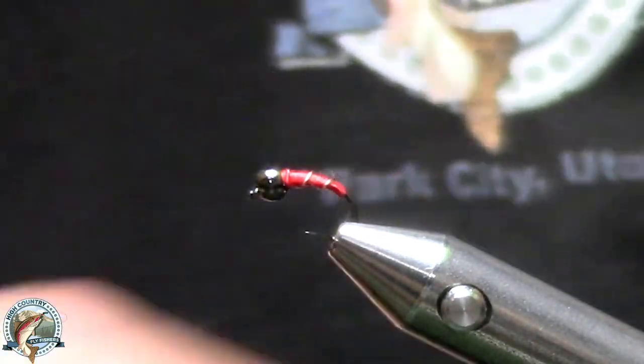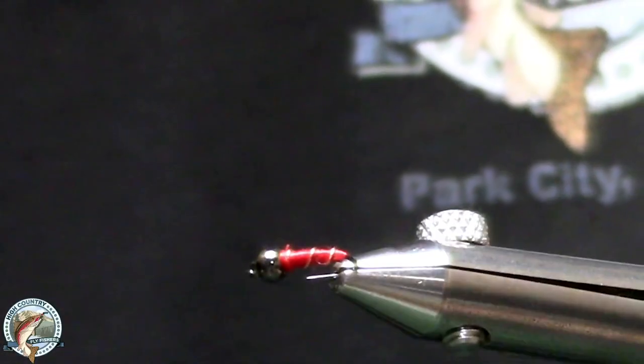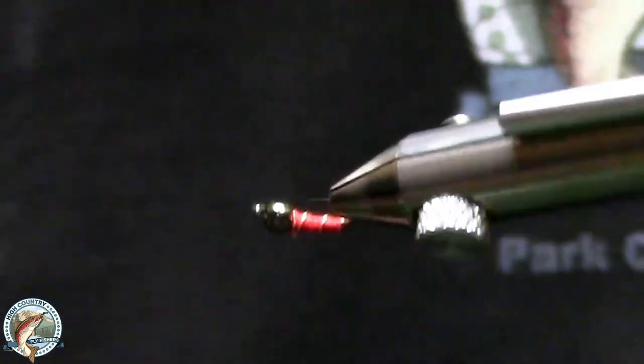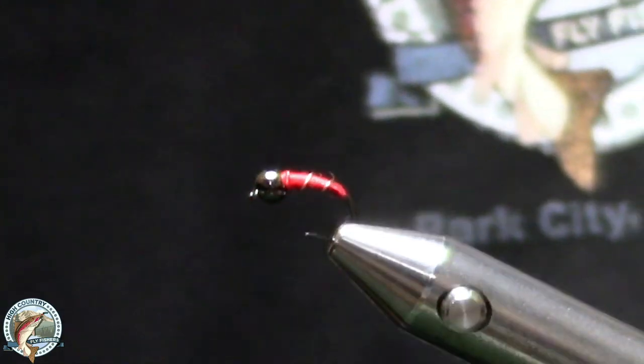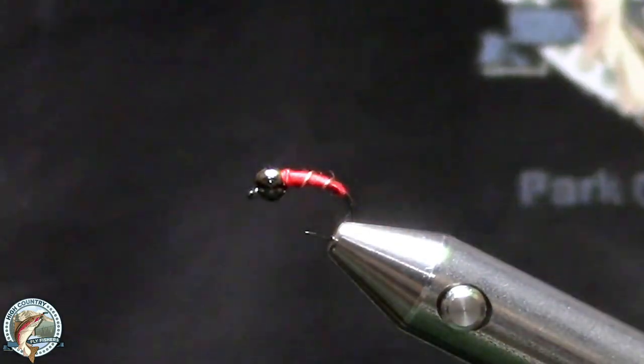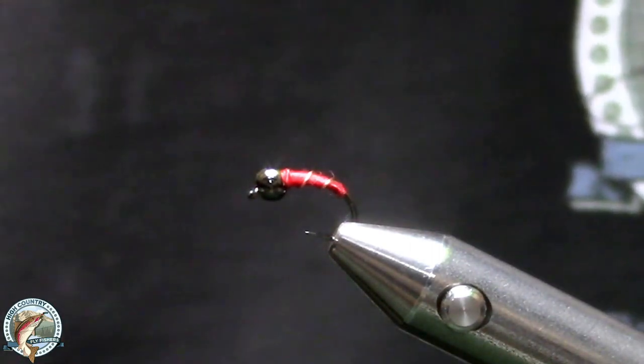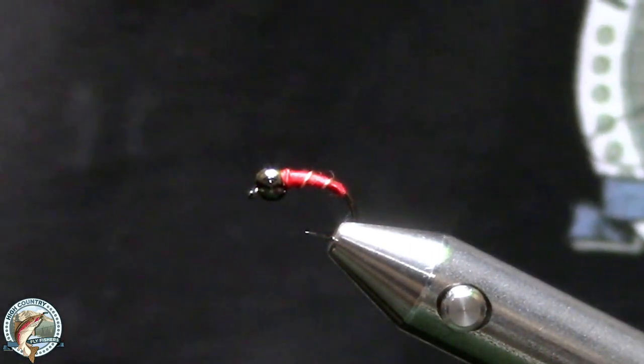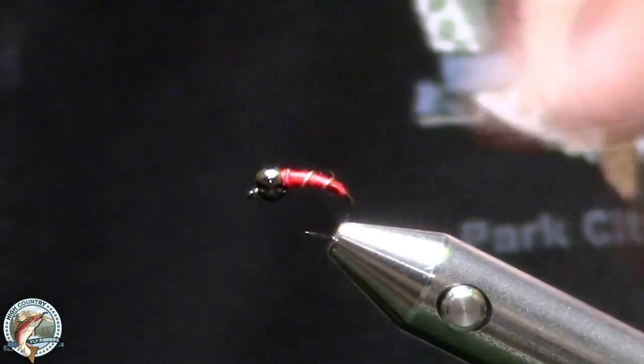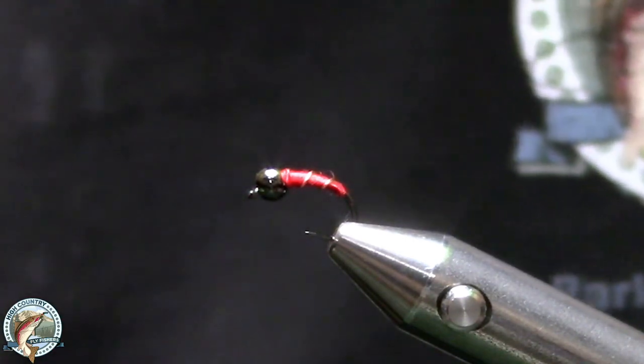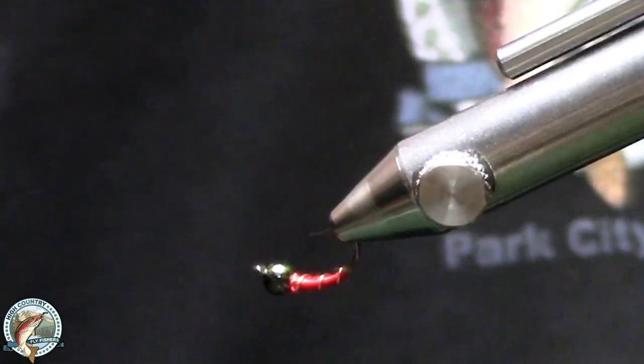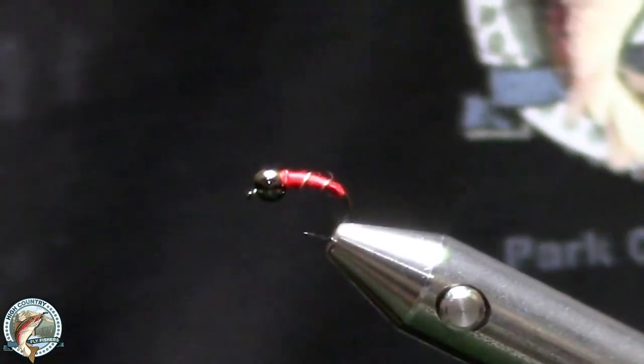That's a finished zebra midge. Other things you could do to this if you want: you could coat it with UV cement, which a lot of people do today. I don't know that that really matters, but that's a finished fly. This fly can be tied in any color you can imagine. We can tie them in black with red wire, silver wire, gold wire, copper wire, green wire. And then we can tie the body in brown, olive, gray. I mean, there's no correct color pattern for this.